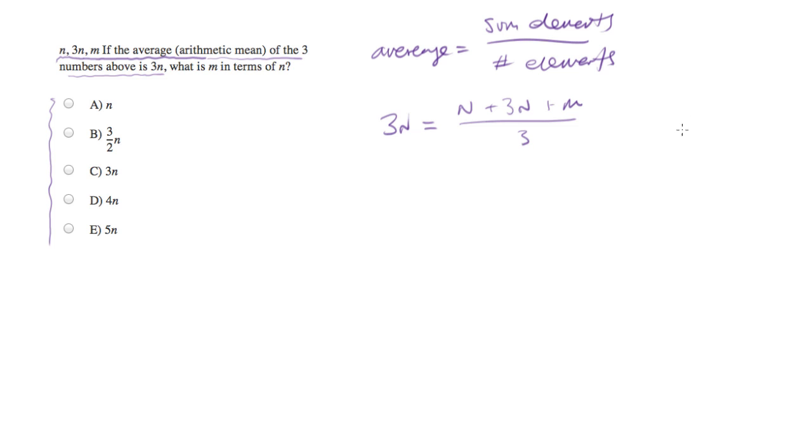And they ask for find m. So let's see if we can solve this equation for m. And I believe that we can. Let's multiply both sides by 3. And we'll have 9n equals 4n plus m. Let's subtract 4n from both sides. And we'll be left with 5n equals m.